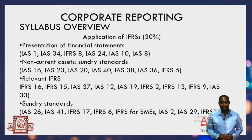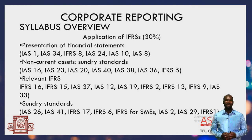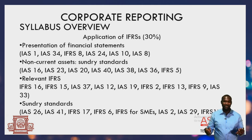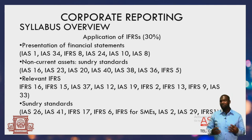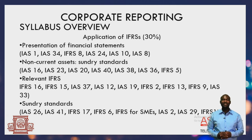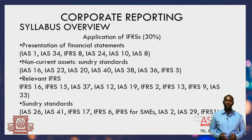Other sundry standards we shall look at — though not examined as regularly — include IAS 41 for agriculture, IFRS for SMEs, inventory standards, and IFRS 1 for first-time adoption of IFRS. These may come up as contemporary issues. The weight for the IFRS area is 30%. Please join me as we go into detail on all these relevant standards. Let's move to the next discussion — business combinations.